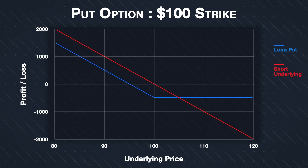To the downside, the payoff is very similar to shorting the 100 shares. The difference being that as $500 of premium was paid for the option, the profit is $500 less at every point below the $100 strike price.